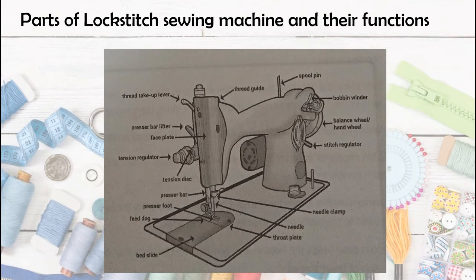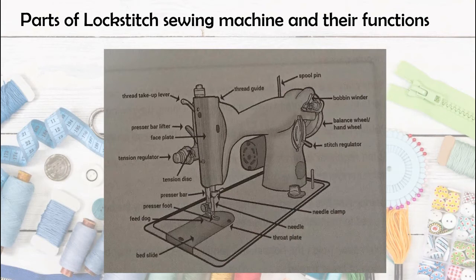The first part is the spool pin — it holds the spool of thread in place. That is where we place the thread. Next, the thread guide holds the upper thread in place from the spool pin to the needle. Note that the picture shows a treadle sewing machine — sewing machines may look different but they have the same part names. The thread guide holds the upper thread from the spool to the needle, and the thread passes through it.